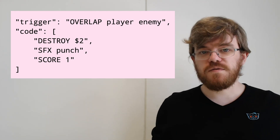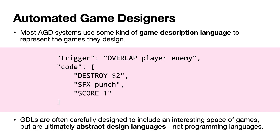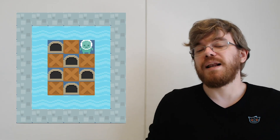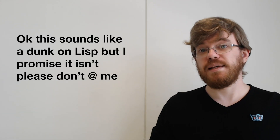These are abstract design languages — they're not programming languages — and they're usually designed to be interesting and useful, designed to capture a particular space of games. So the Video Game Description Language or VGDL, which is pretty well known, is designed to include a number of classic games from the late 80s early 90s, but it's not a programming language in and of itself, although some of them get quite close — in the paper we talk about a system that uses Lisp.